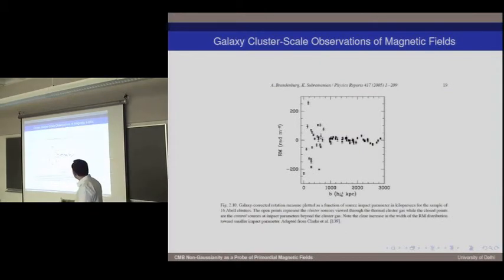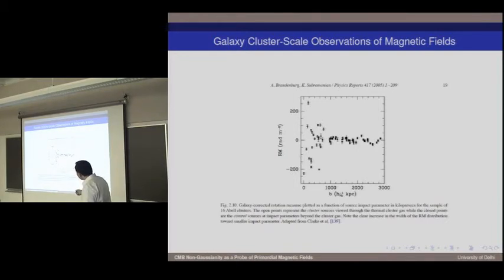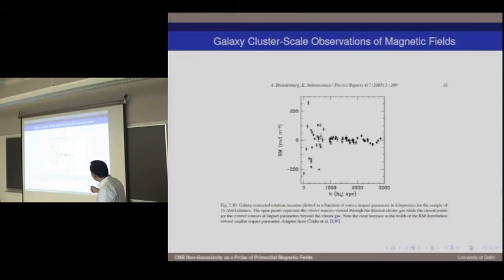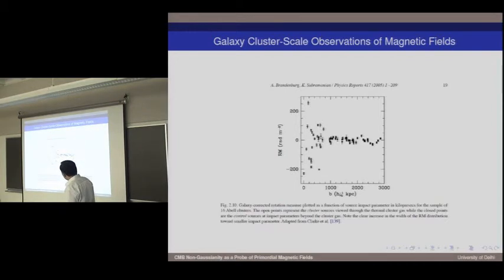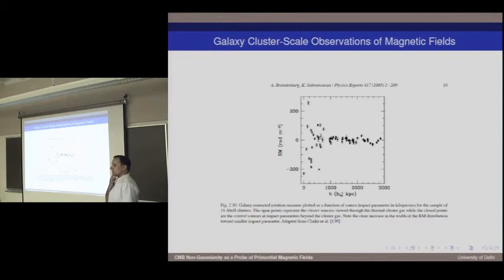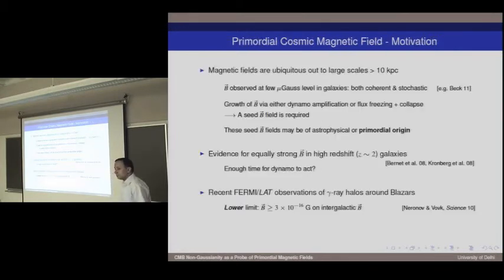Jumping up in scale from individual galaxies to clusters of galaxies, we can use Faraday rotation to infer the magnetic field in galaxy clusters. On the y-axis is the rotation measure, and on the x-axis is the impact parameter — the line of sight through the cluster. Objects with some polarization in the background show that when viewed through large impact parameter you see nothing, but as you go towards the core of the cluster, you see a magnetic field that spreads out to about one megaparsec. So even clusters appear to be magnetized, which poses a big challenge: how do you form a magnetic field one megaparsec large to span a cluster?